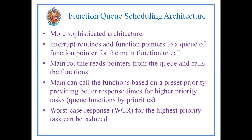Whenever comparing these architectures, round robin is a simple architecture, and round robin with interrupts is more sophisticated. But round robin with interrupts also has limitations. That's why we have another architecture — the function queue scheduling architecture — which is still more sophisticated than both round robin and round robin with interrupts.